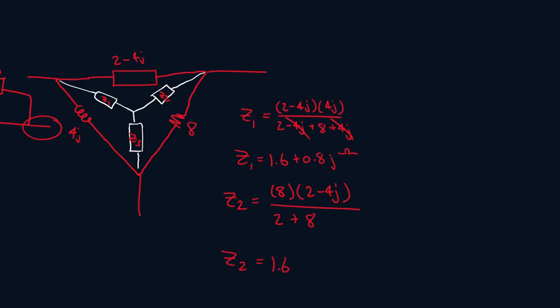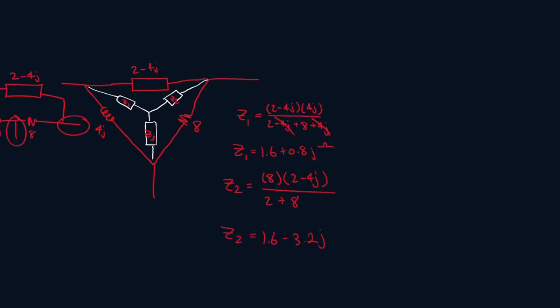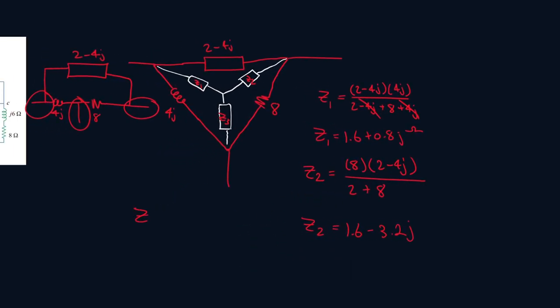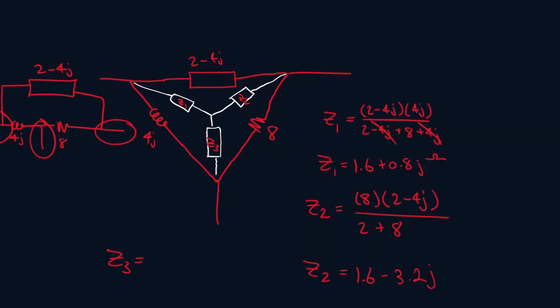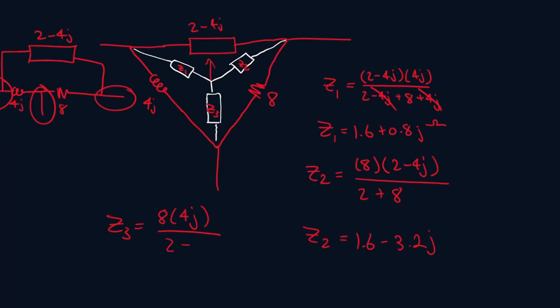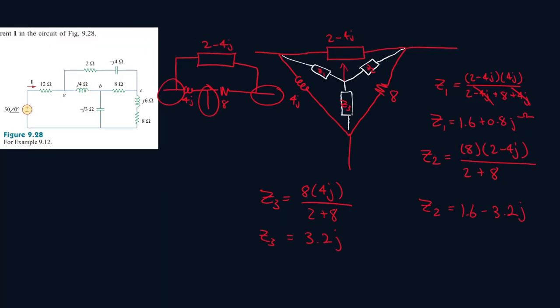And now finally for the last part, Z3. I see directly below it, or in this case above it I guess, it's the 2 minus 4j that's in the direction of the arrow, so we'll ignore it. So it'll be 8 times 4j all over 10, or just 2 plus 8. That's 3.2j, which is Z3.